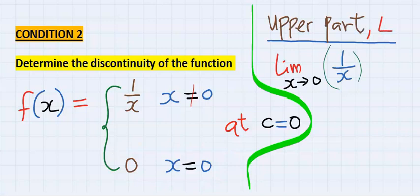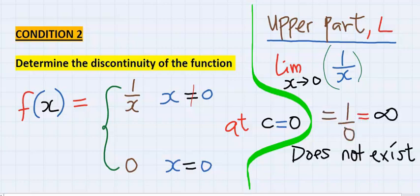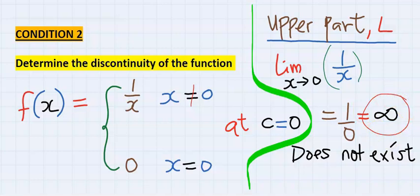To understand this, let's take the limit of the upper part, which is the left hand limit. You can see we obtained infinity, which is undefined. And hence, the upper part, which is the left hand limit does not exist.